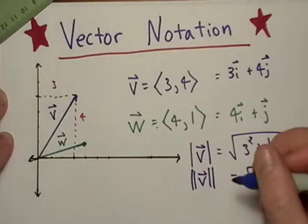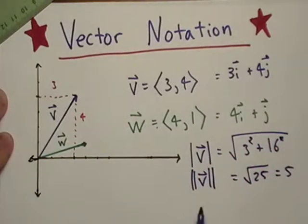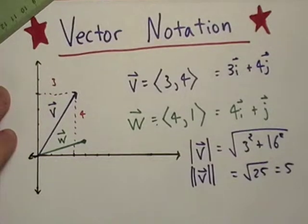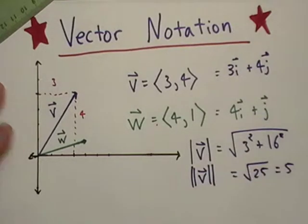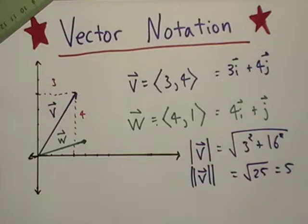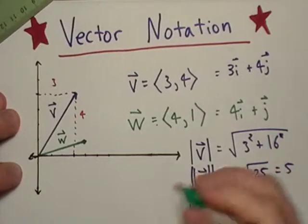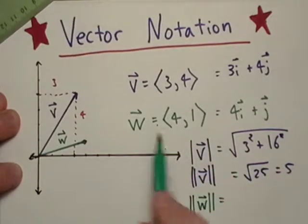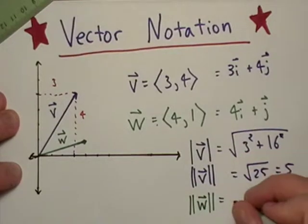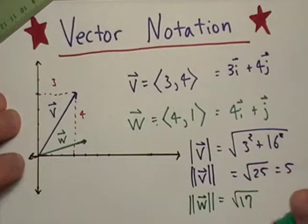Sometimes you might see the double brackets for magnitude notation. Likewise, let's also do vector w. ||w|| equals √(4² + 1²), that's √(16 + 1), so √17, and there's no simplification we can do there.